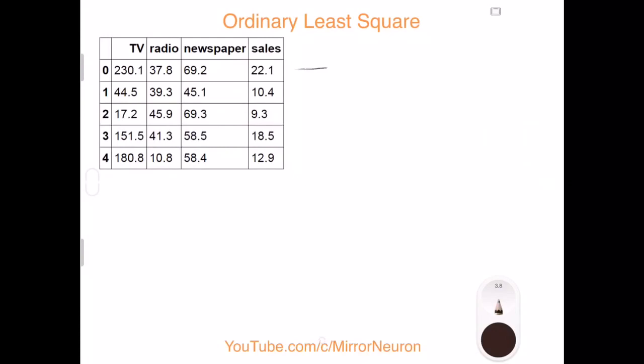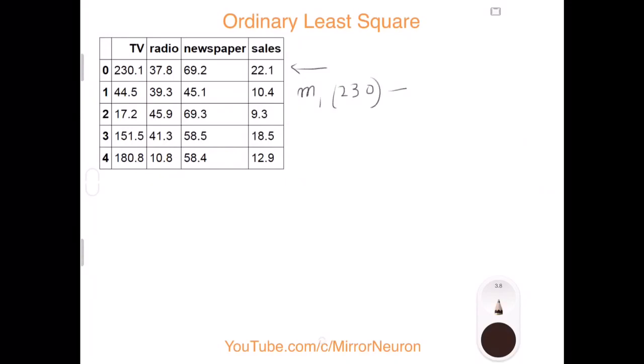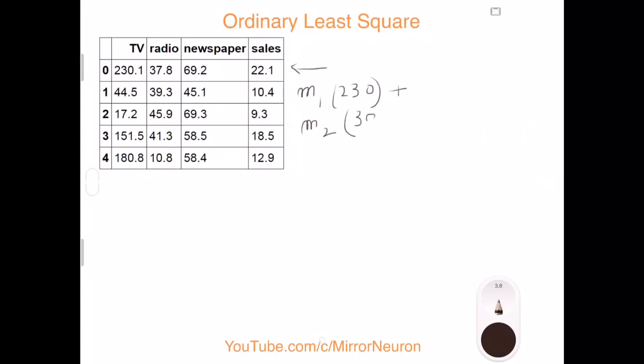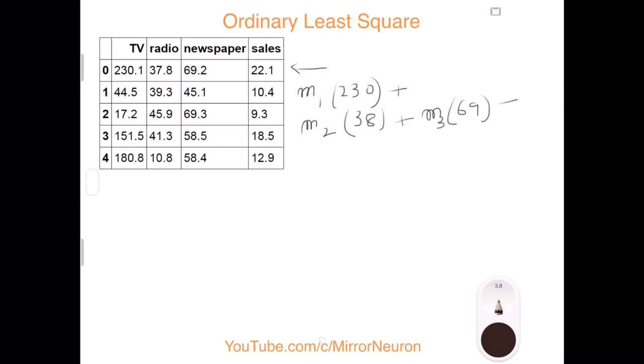If you look at the very first record here, and if we have to write it in a linear combination of all these columns in terms of the sales, then we can write something like this: m1 times 230—I'm just rounding off the decimal values here—plus m2 times 38 plus m3 times 69 plus some error which we are not sure about.